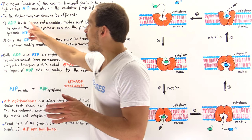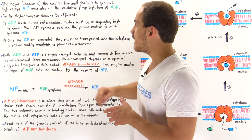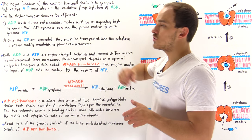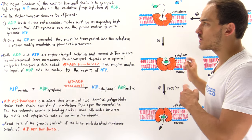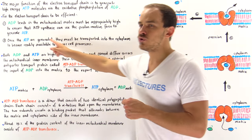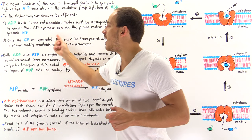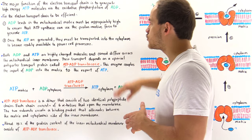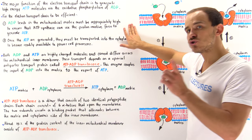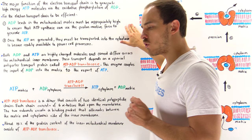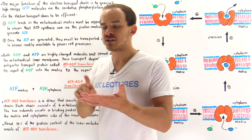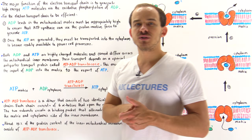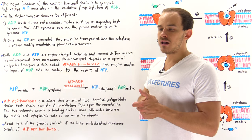For the electron transport chain to be effective, ADP levels in the mitochondrial membrane must be appropriately high to ensure that Complex 5 ATP synthase can actually use the proton motive force generated by Complexes 1, 3, and 4 to generate those ATP molecules.